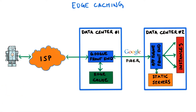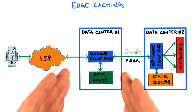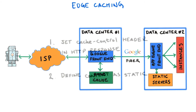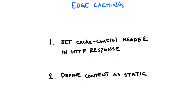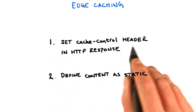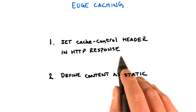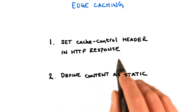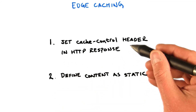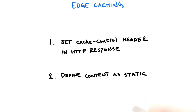So the question is, what do you need to think about to use edge caching? Well, there are two ways. The first one is to set the cache control header in the HTTP response. This should only be done if a subsequent request of this kind would return the same result.